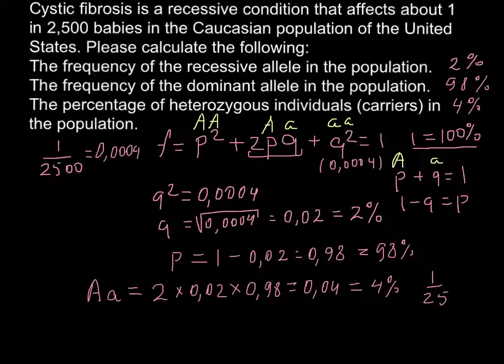And I want to highlight that this is true for the Caucasian population of the United States. If you take a different ethnic group, Asians or Africans, the frequency of this allele would be different. Even in Caucasian groups in Europe, in different countries like England, Germany, or Russia, the frequency of these alleles would also be different.